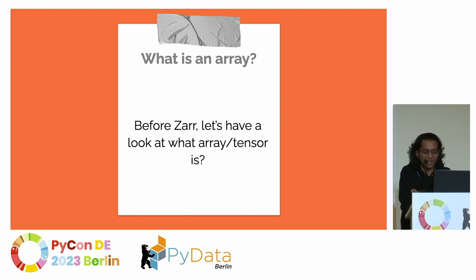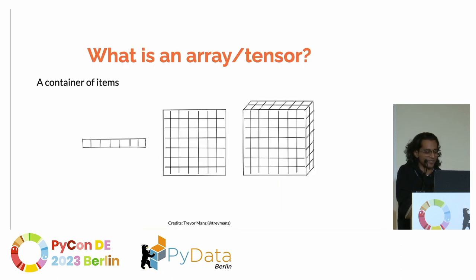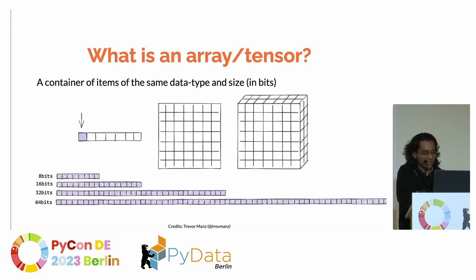Before ZAR, let's look at what an N-dimensional tensor is. An array is a container of items — how you contain your data. You have 1D, 2D, and ND. It could be 8 bits, 16 bits, 32 bits, or 64 bits. And we have dimensions: 1D, 2D, and 3D.